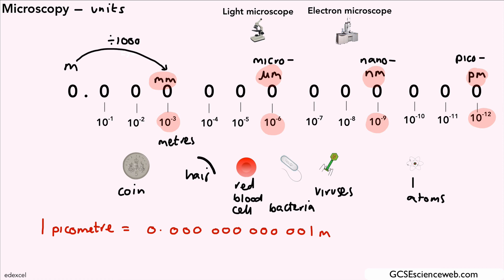So these are the kinds of sizes of objects you would see at the various different units. Our light microscope approximately allows us to see between 10 to the minus 4 and 10 to the minus 6 or 7.